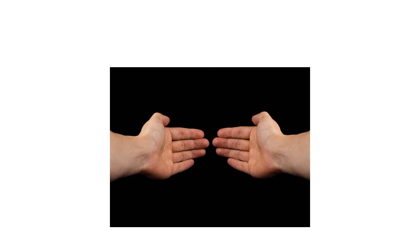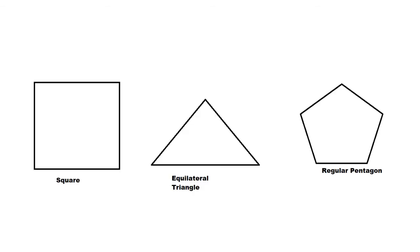Our hands are the mirror image of each other. Mirror image means the visual that we see of any object. If we see our right hand, it will resemble our left hand in a mirror. If we consider this red line to be a mirror, then the hands are the mirror image of each other — meaning if you see the right hand in a mirror, the image seen will resemble the left hand.